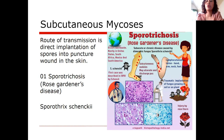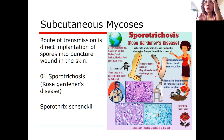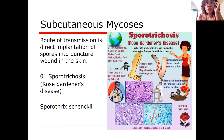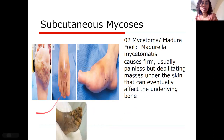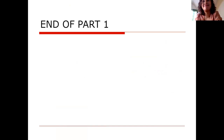Sporothrix schenckii is dimorphic and causes subcutaneous infection. It can form ulcers and nodules along lymph nodes, affecting the hand, arm, neck, and foot. The second subcutaneous mycosis is mycetoma, or Madura foot, caused by Madurella mycetomatis. This can be debilitating — the patient may not be able to walk because granulomas form inside the foot, creating masses. This concludes Part 1 of the mycology lecture.